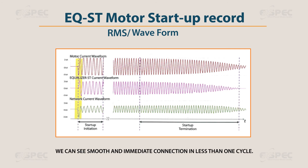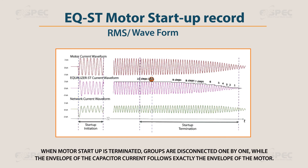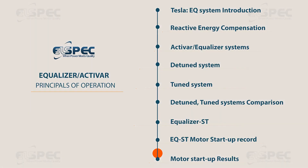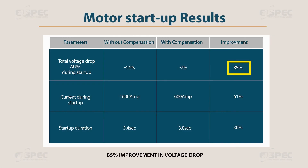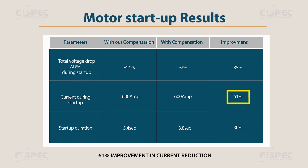We can see smooth and immediate connection in less than one cycle. When motor startup is terminated, groups are disconnected one by one, while the envelope of the capacitor current follows exactly the envelope of the motor. The results: 85% improvement in voltage drop, 61% improvement in current reduction, and 30% reduction in startup duration.